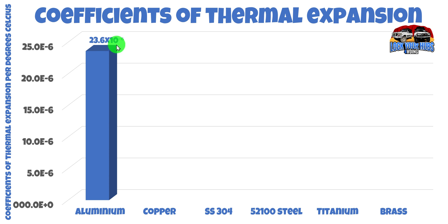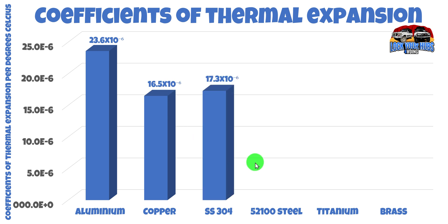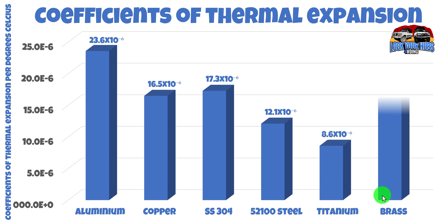So it's a very, very small amount. Copper is a lot less, 16.5. Stainless steel, 17.3. This is our common bearing race steel. So we've got 12.1 there. Titanium is even less at 8.6. And finally, brass, 19.